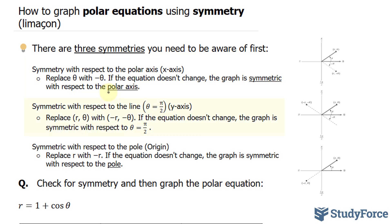The next one is symmetry with respect to theta equals pi over 2, in other words, the y-axis, the vertical axis. For this, you have to replace both r and theta with their negative counterparts, and if the equation doesn't change, the graph is symmetrical with respect to theta equals pi over 2.